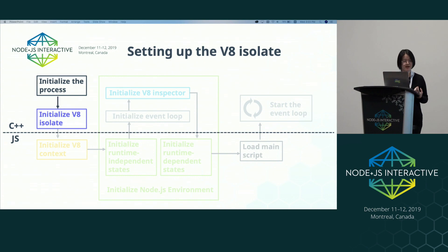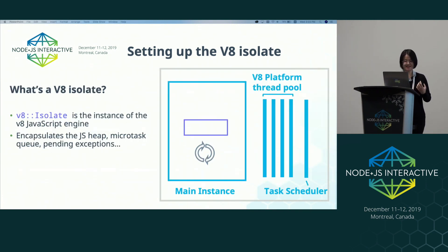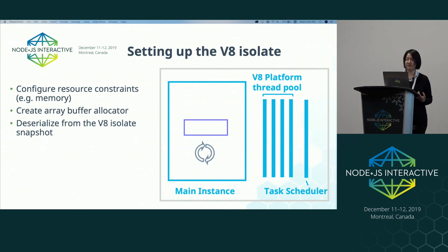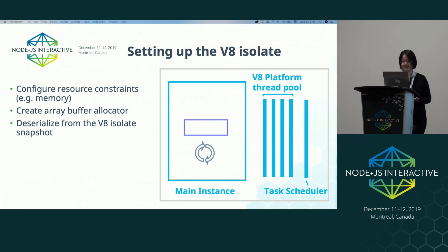After the process and default event loop have been initialized, we move on to set up the V8 isolate for the main instance. V8 isolates are the instances of the V8 JavaScript engine. It encapsulates, for example, a JavaScript heap, a microtask queue for promises, and pending exceptions, and so on. To set up the V8 isolate, we first configure the resource constraints, including how much memory this V8 engine instance can use. We'll also create an array buffer allocator that is in charge of allocating external memory for buffers and other typed arrays. Then V8 will deserialize the isolate from an isolate snapshot.